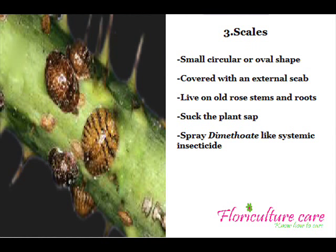Scales are small circular or oval-shaped insects covered with an external scab. They mostly live on old rose stems and roots, using those plant parts to suck plant sap. When you look at them, they seem like a part of the stem because they are completely attached to it. To control them, spray a systemic insecticide like Dimethyloid. When using contactable insecticides, you need to spray enough to fully wet them.